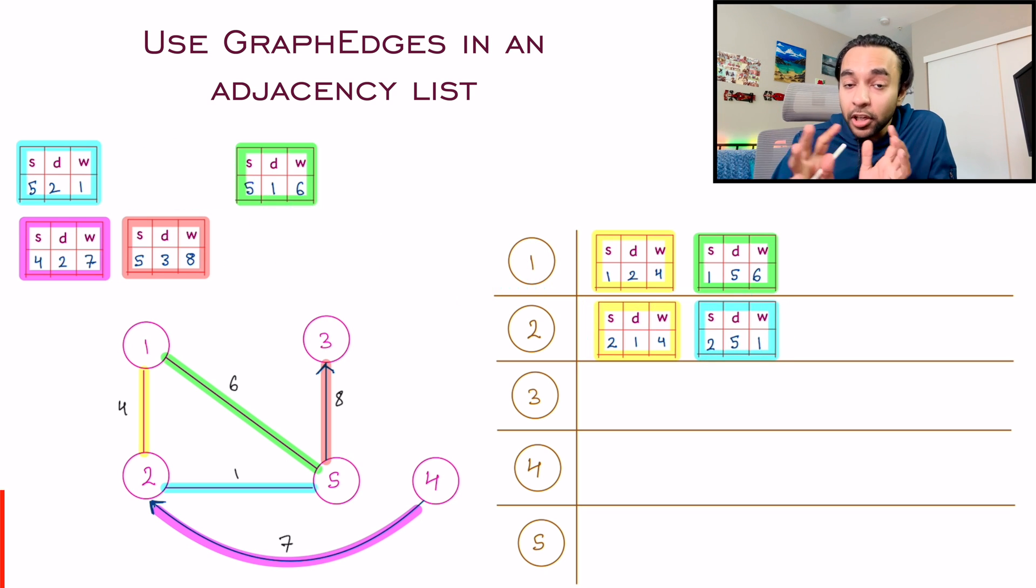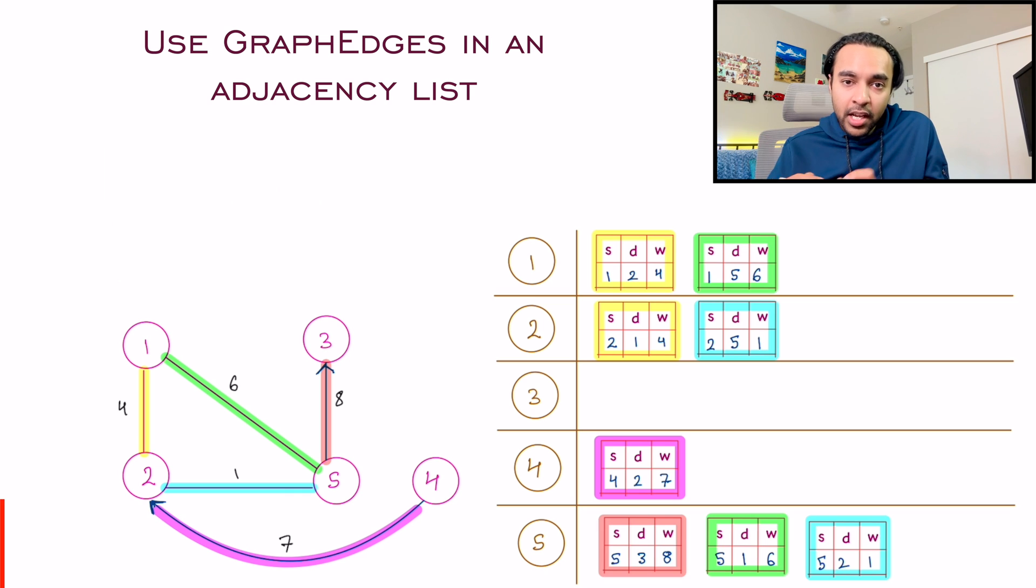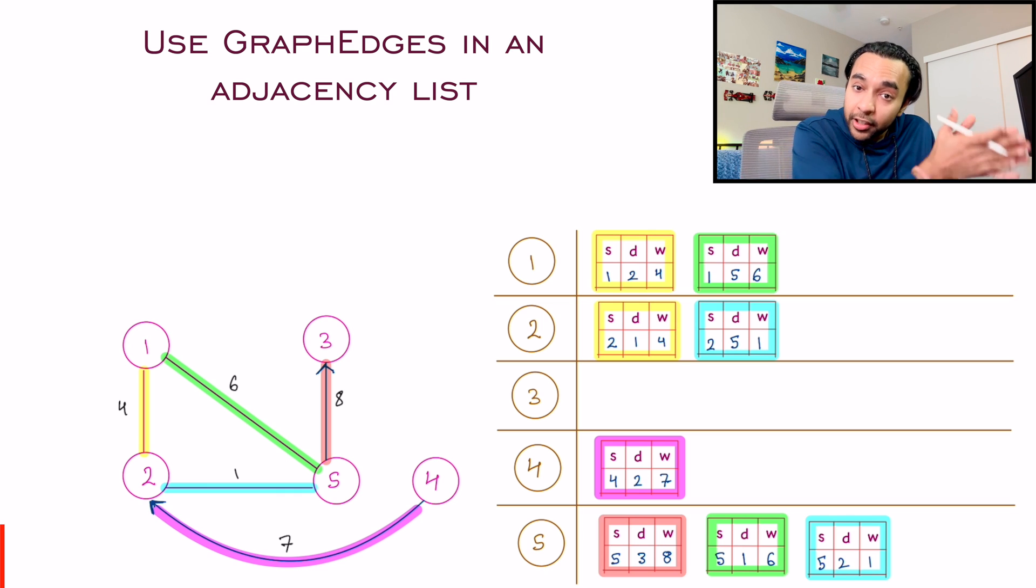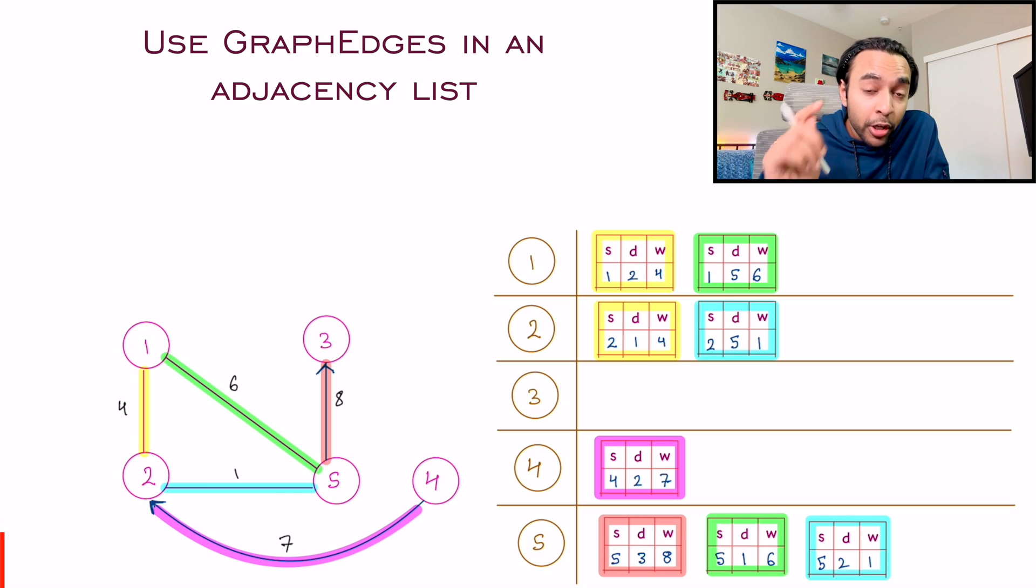Similarly, you can now populate your entire adjacency list. Look at this representation now. This representation is now capturing all of the information that you already had. And now you have the information of the weights as well.